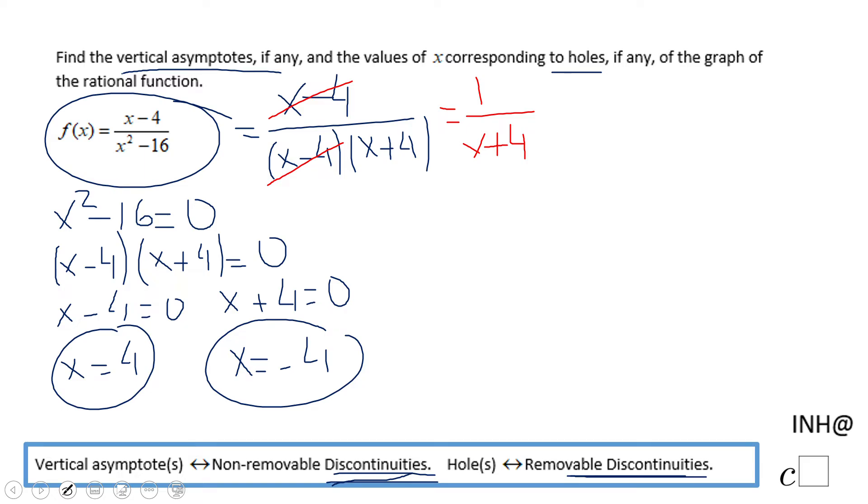But that tells us that this is non-removable. We see it's still here. So this is going to be a vertical asymptote.